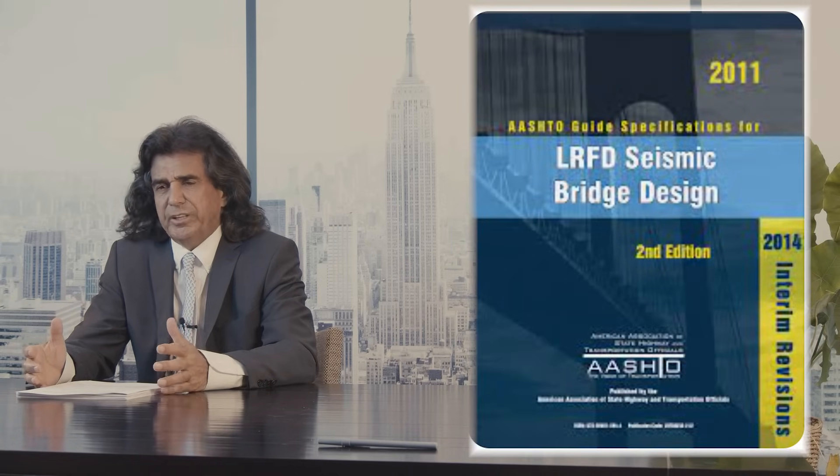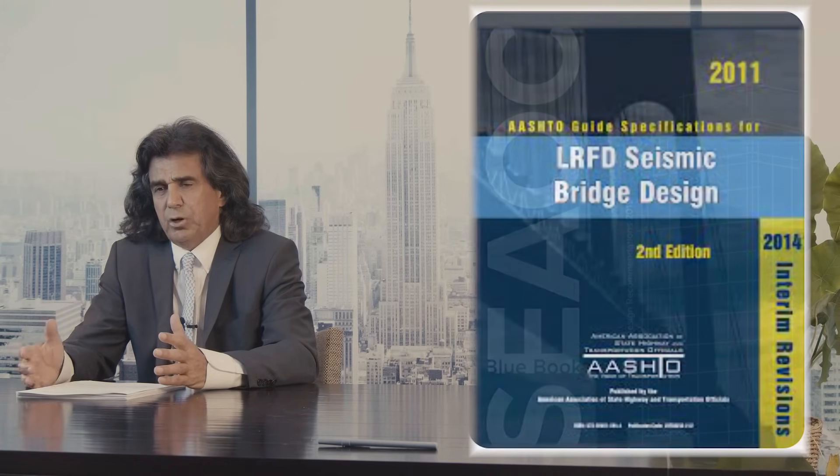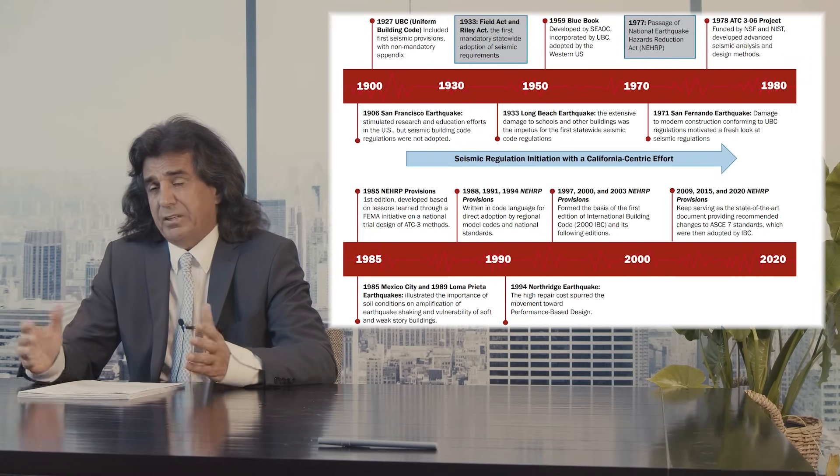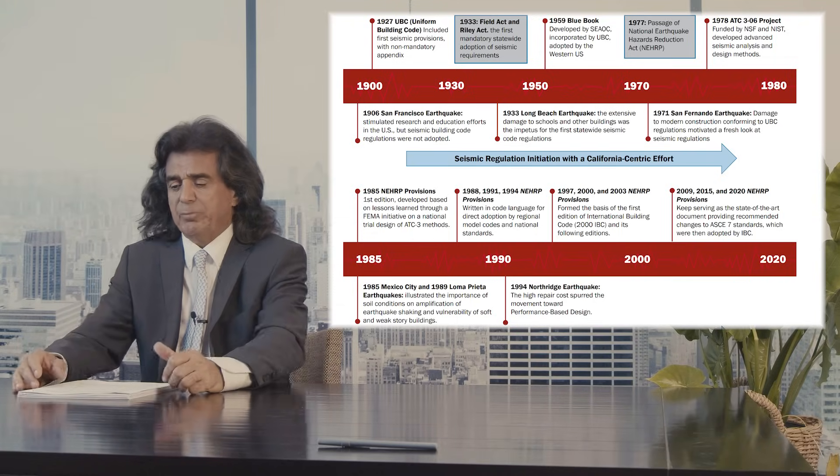Every country has a collection of design provisions and construction rules in the form of specifications that designers and contractors must follow in order to build buildings or bridges. These specifications are continuously modified and updated, and there are organizations representing different materials that are responsible for maintaining them. Almost all of these design provisions are developed by researchers who are faculty at universities or national labs, and they come out of research.